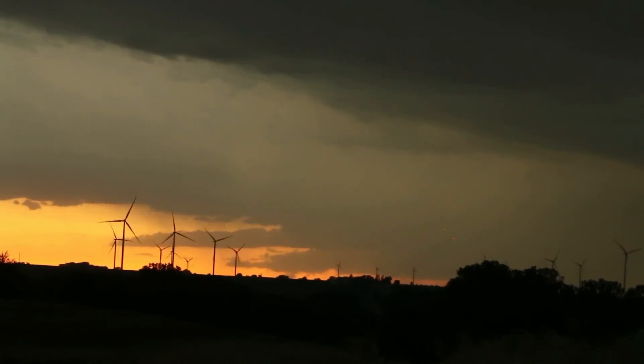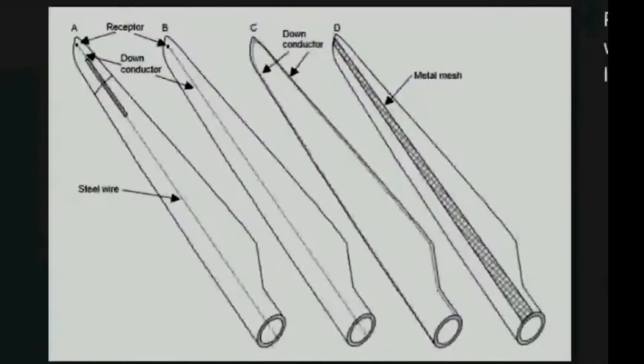No one can avoid strikes hitting turbines, but the damage can be reduced or eliminated by the use of sensors and a clever design. So how can we protect wind turbines from lightning strikes to minimize their impact?